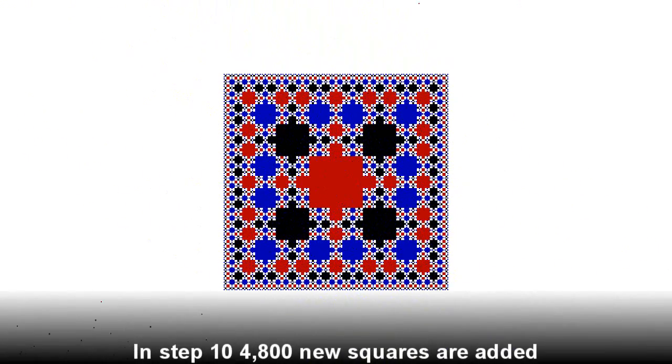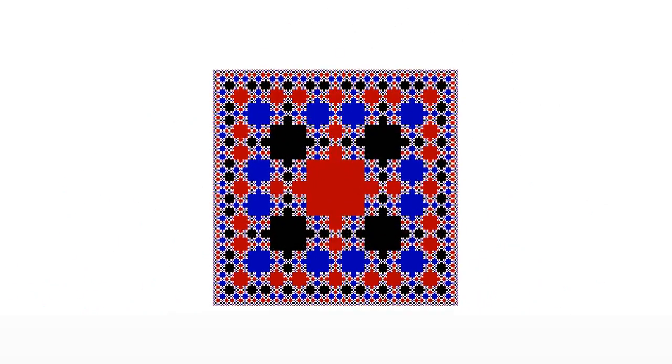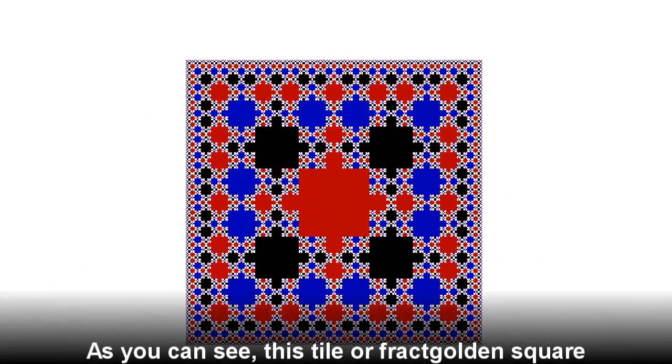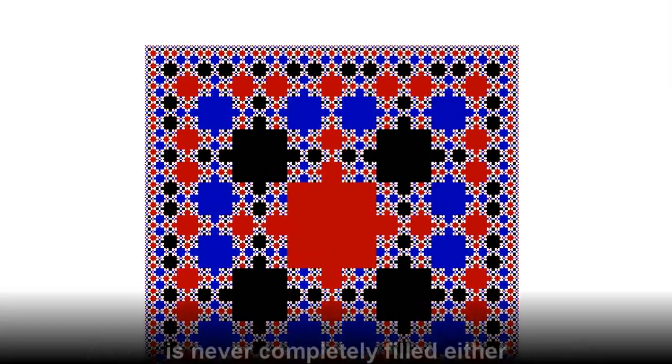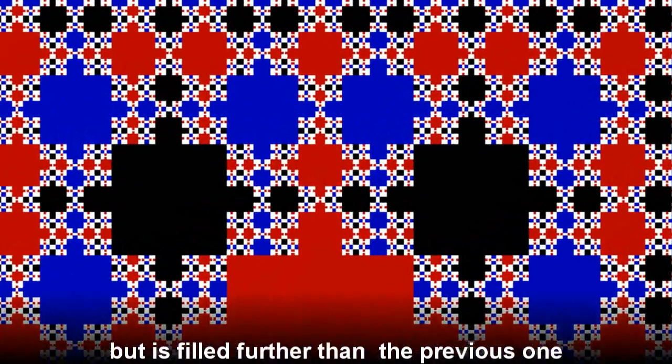In step 10, 4800 new squares are added. As you can see, this tile of fractal golden square is never completely filled either, but it is filled further than the previous one.